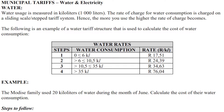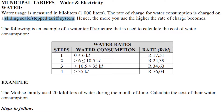The first one I'm going to look at is municipal tariffs — we'll be talking about water and electricity. In our example, water usage is measured in kilolitres, that's a thousand litres, so a thousand litres equals one kilolitre. The rate of charge for water consumption is charged on a sliding scale, which means you're going to be charged more as you use more — the more you use, the higher the rate.